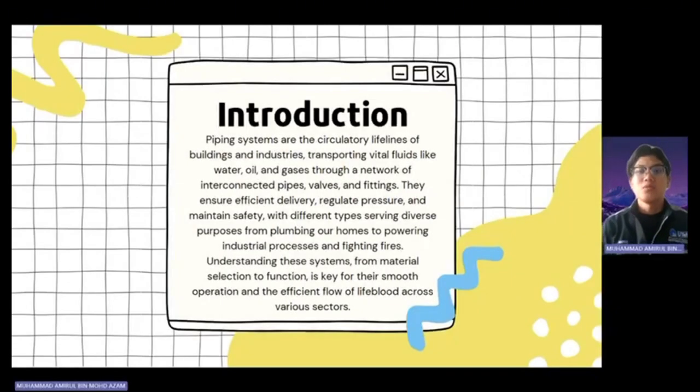Assalamualaikum warahmatullahi wabarakatuh. Today, I want to present about introduction. Piping systems are the circulatory lifeline of building and industry, transporting vital fluids like water, oil, and gases through a network of interconnected pipes, valves, and fittings. They ensure efficient delivery, refrigeration, and maintenance safety with different types serving diverse purposes from plumbing our homes to powering industrial processes and fighting fire. Understanding these systems, from material selection to function, is key for their smooth operation and efficient flow of lifeblood across various sectors.